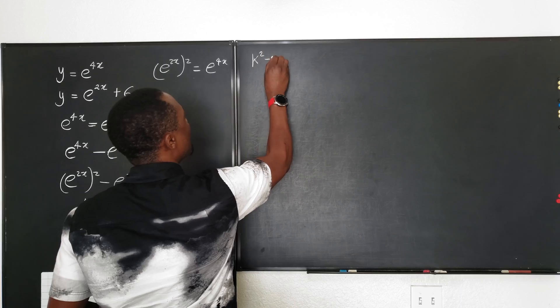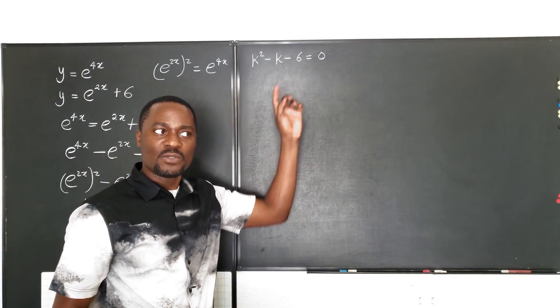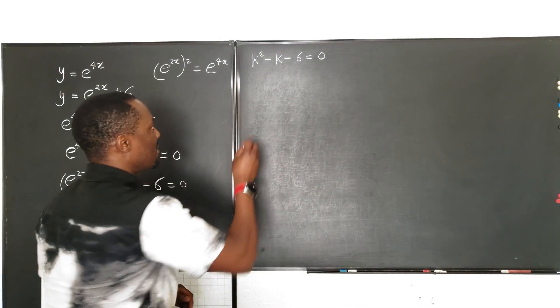So we've got k squared minus k minus 6 equals zero. If we factor these, what two numbers will give you negative 6 when you multiply them? But when you add them, you're going to get negative 1. Well, it's going to be negative 3 and positive 2.